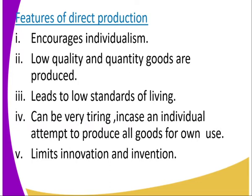Number four: you can become very tired if an individual attempts to produce all goods for their own use. For example, you produce or cultivate maize, beans, greens, cabbages, make your own oil, and build your own house. It is expensive and also tiring, since you are producing everything you need without buying. Number five: it limits innovation and invention — you cannot think outside the box.